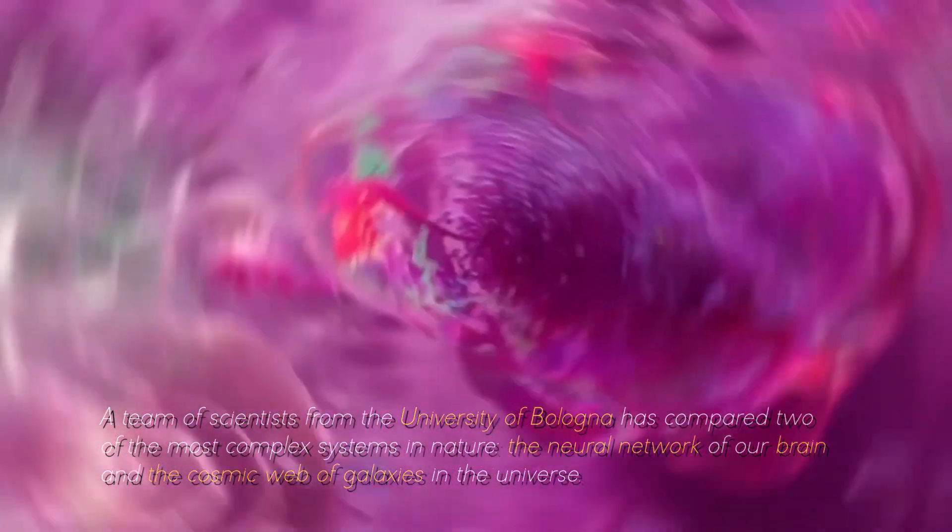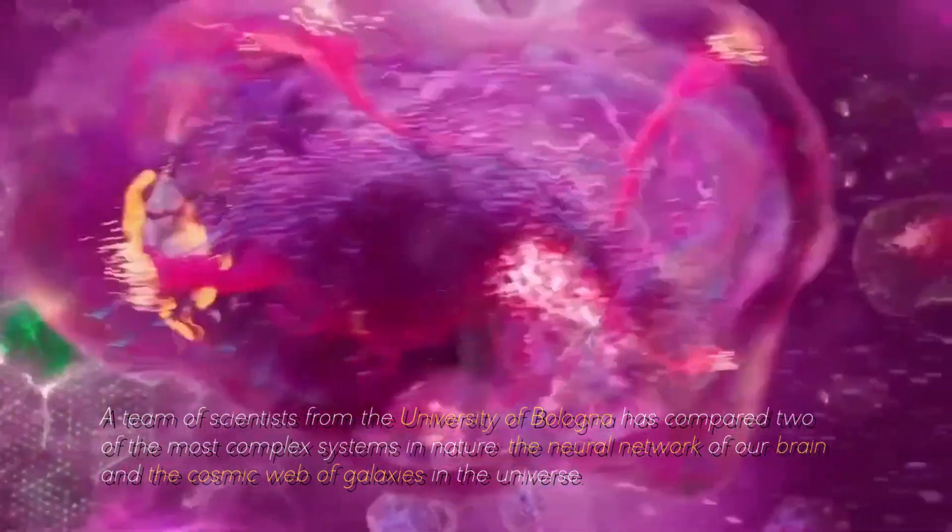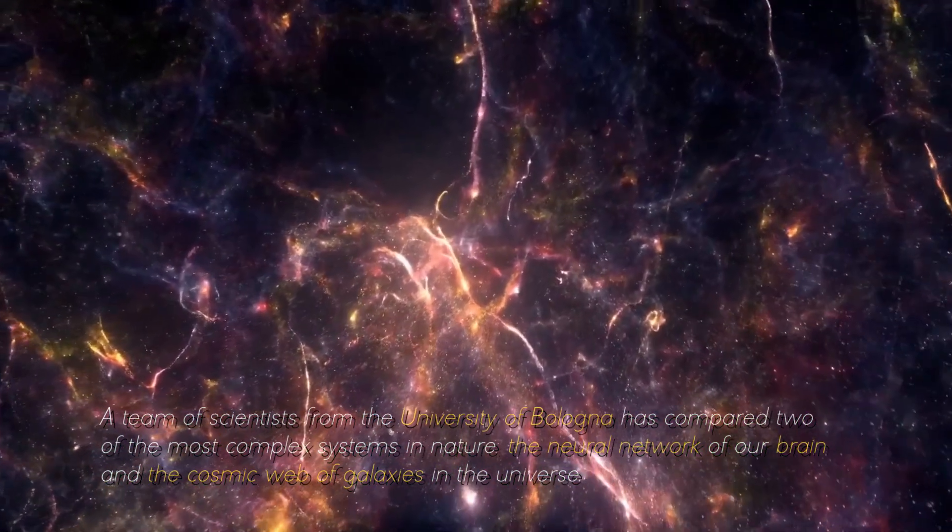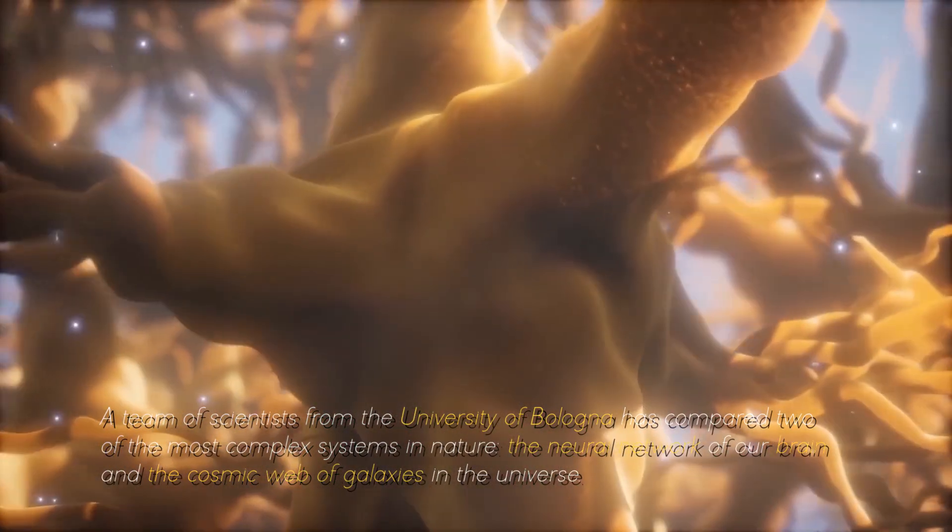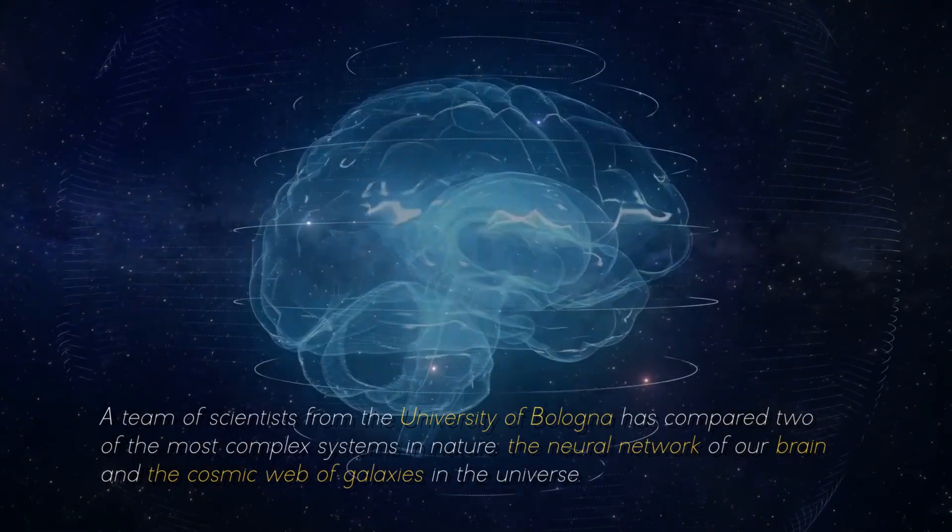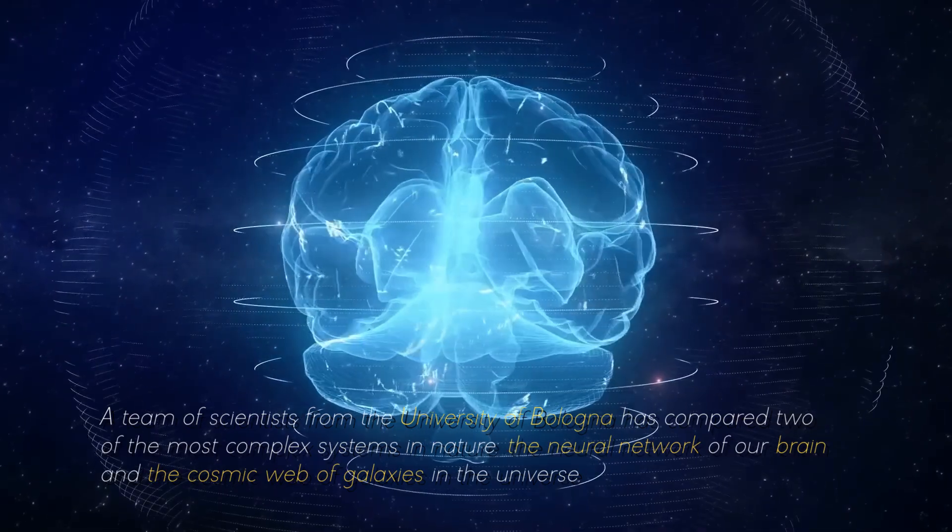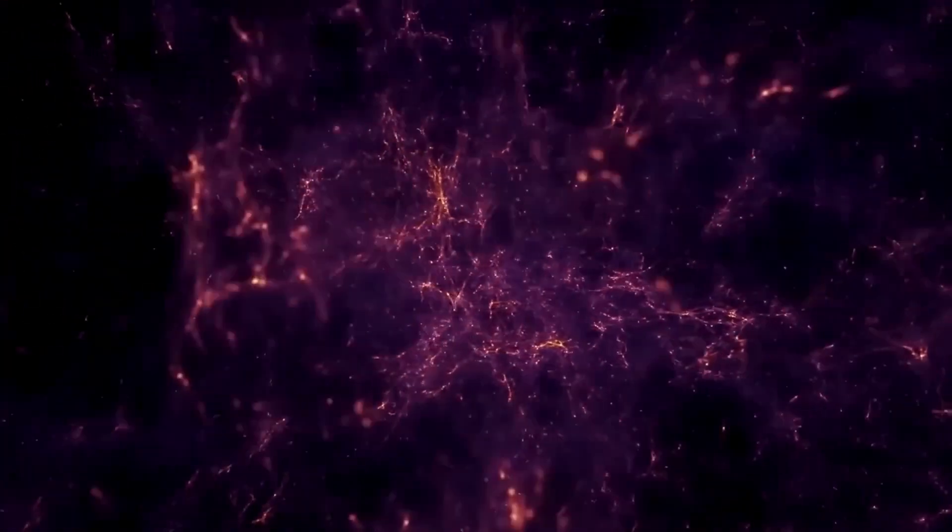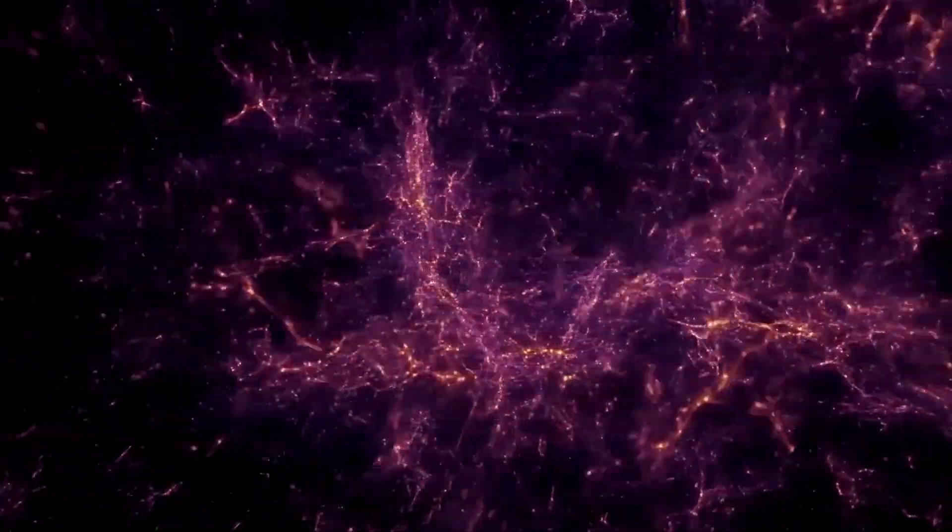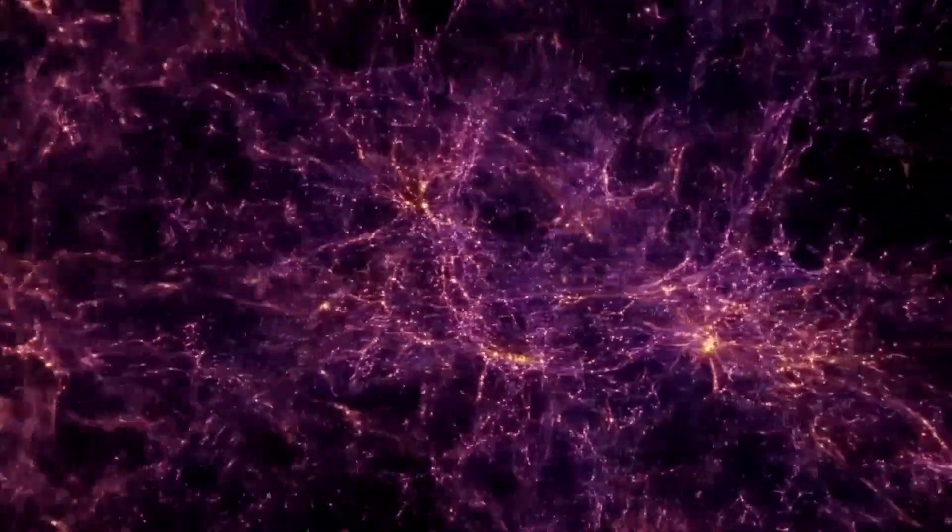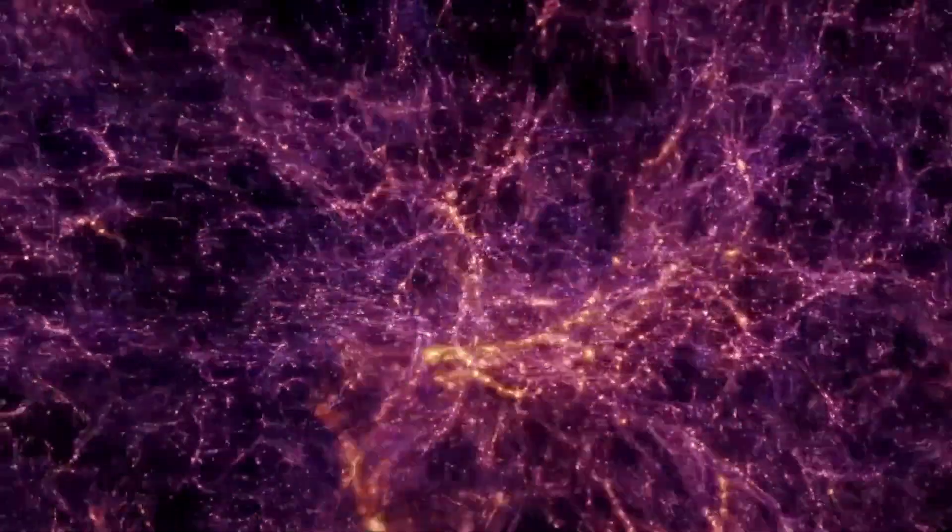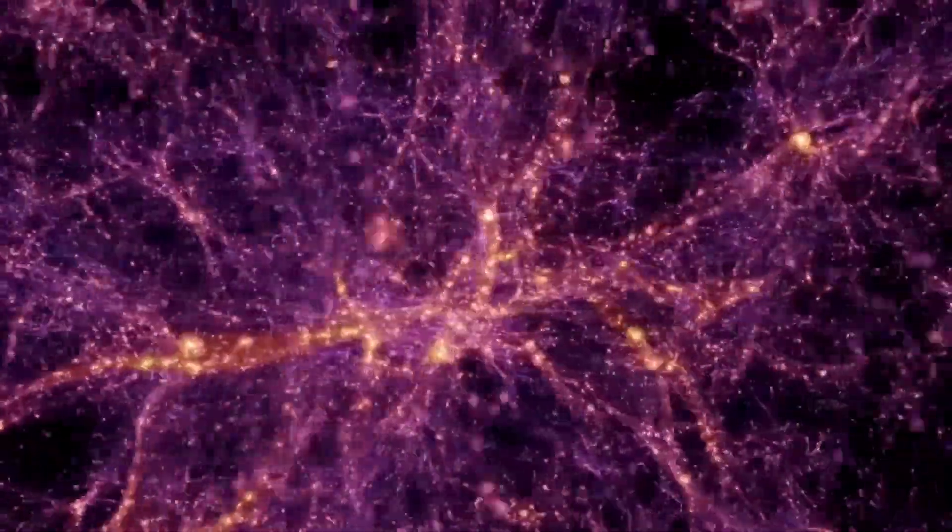A team of scientists from the University of Bologna has compared two of the most complex systems in nature, the neural network of our brain and the cosmic web of galaxies in the universe. What did they discover? That they are incredibly similar. And not just as they look if we compare a human neuron with a cluster of galaxies. There's more.